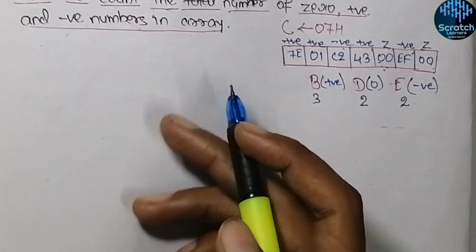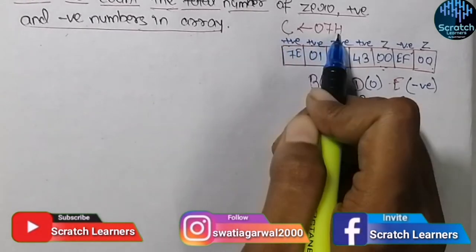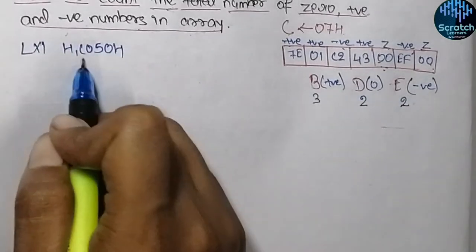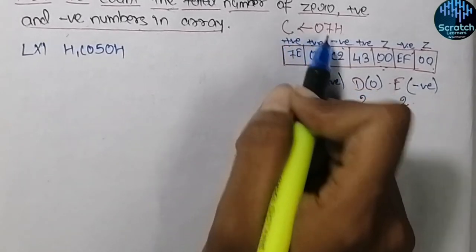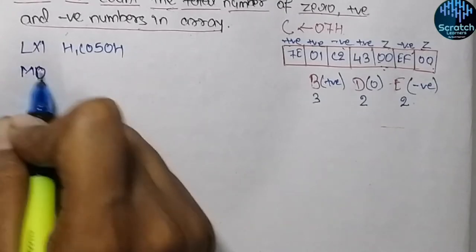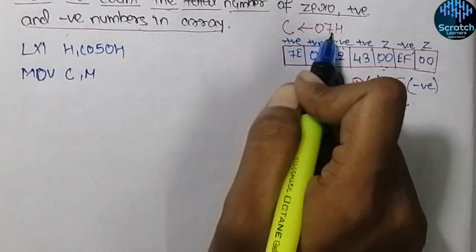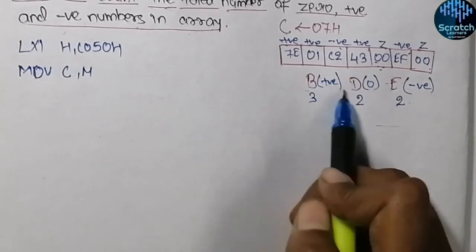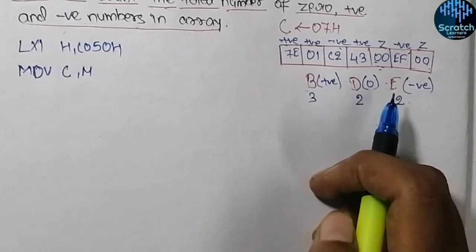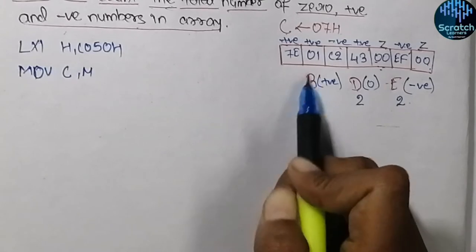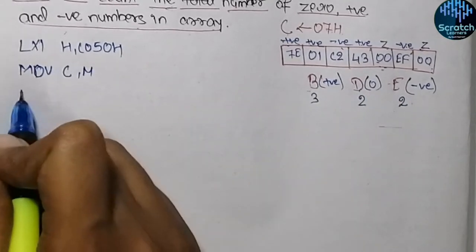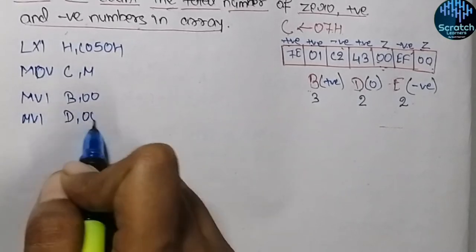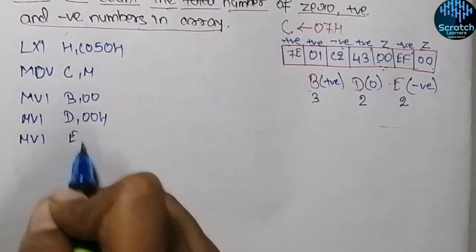Now let's write the assembly language program. First we will input the total number of elements using LXI H with address C050 hex. From this address I will input the count of total elements and move it into register C. Before inputting elements, since we need to use 3 registers, we will initialize them with 0 so that these registers do not contain any garbage value. So MVI B with 00H, similarly D will be initialized with 00H, and E will also be initialized with 00H.